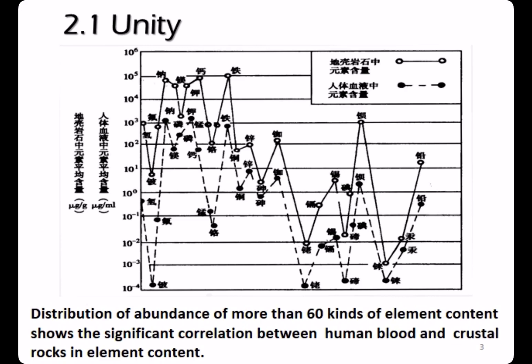This figure shows the unity between human and environment. Each dot represents an element. The solid line indicates the element concentration in the crust, and the dashed line indicates the element concentration in human blood. What you see here is an almost perfect correlation in the element concentration between human blood and the element concentration in the crust.